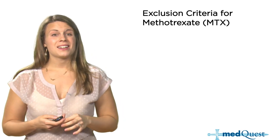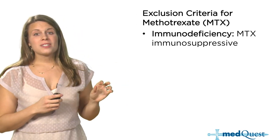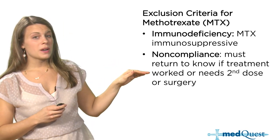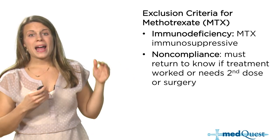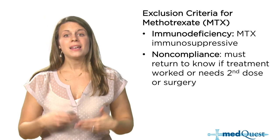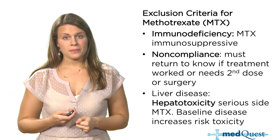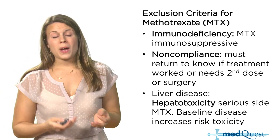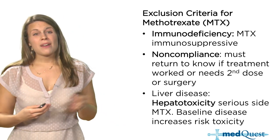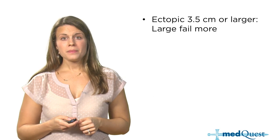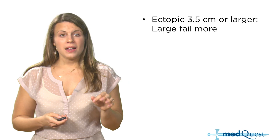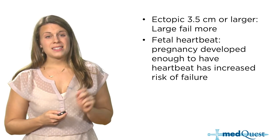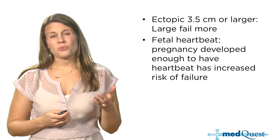Exclusion criteria for methotrexate — who should not get it? First, anyone with any kind of immunodeficiency, since methotrexate is an immunosuppressive agent. Second, non-compliant patients, because these patients require very close follow-up with blood work every week and potential return for a second dose or surgery. Also, patients with any liver disease, since hepatotoxicity is a serious side effect of methotrexate, and baseline liver disease increases toxicity risk. Patients with a very large ectopic are more likely to fail methotrexate. Additionally, if there is already a fetal heartbeat visible, these have an increased risk of failing methotrexate therapy and should go to surgery.